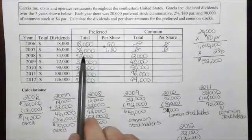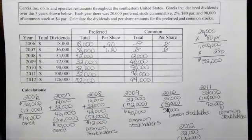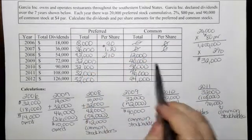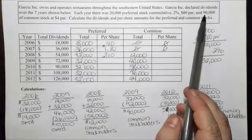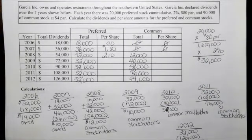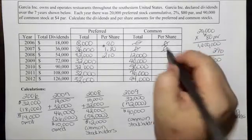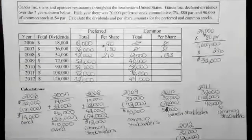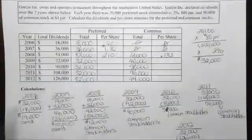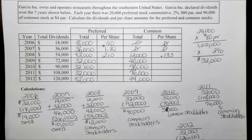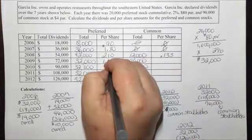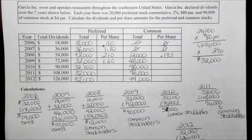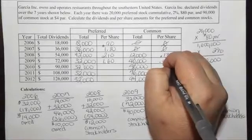In 2008, $54,000 was declared; $42,000 went to the preferred stockholders. $42,000 divided by 20,000 shares gives $2.10 per share. The common stockholders got $12,000 divided by 90,000 shares, so their shares were worth $0.133 per share. In 2009, $32,000 went to the preferred, so $32,000 divided by 20,000 shares gives $1.60 each. Common stockholders got $40,000 divided by 90,000 shares, giving $0.444 per share.